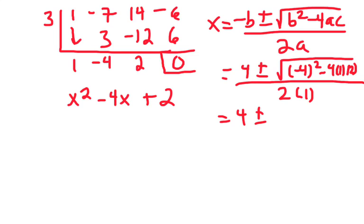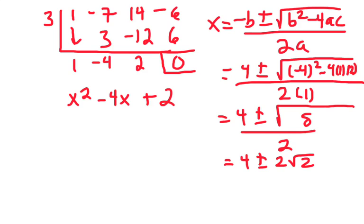So 4 plus or minus. So that's going to be 16. Subtract 8. So 8 divided by 2. And we can reduce that down a little bit to plus or minus 2 root 2. Because 8 is 4 times 2. Divide it by 2. Or 2 plus or minus root 2. Because these 2's cancel. And that's, you get 2 left from that.